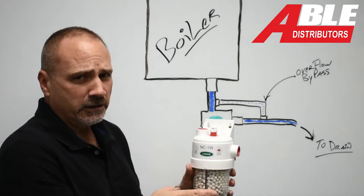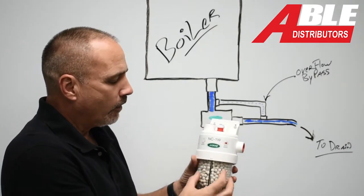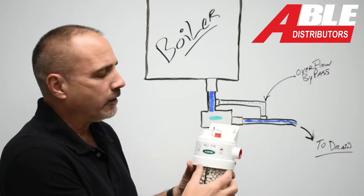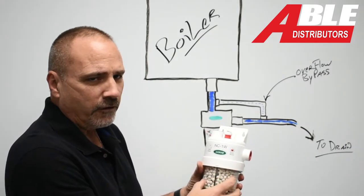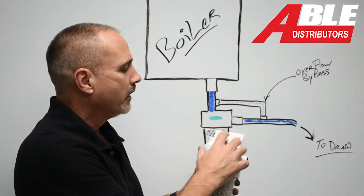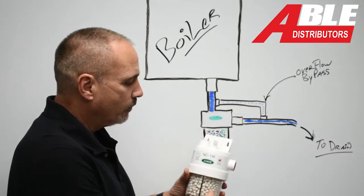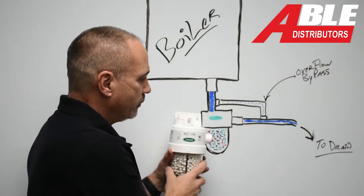If you go there on the maintenance call and you see that's up, then you know, take this apart, clean it out. It obviously got full of sediment or debris and plugged it up. Put the new beads in there and you're ready to go.